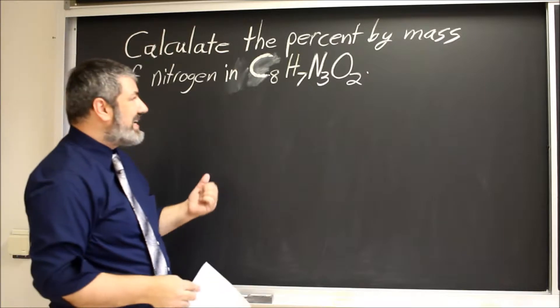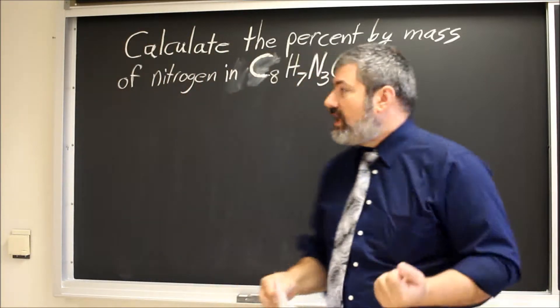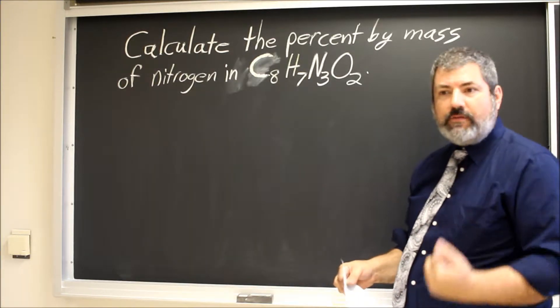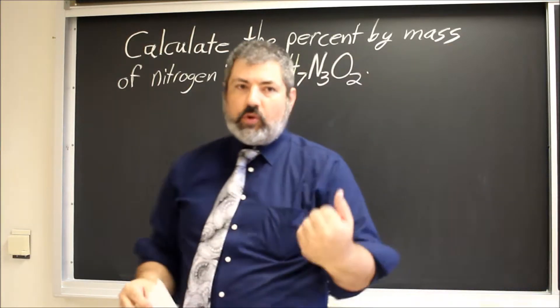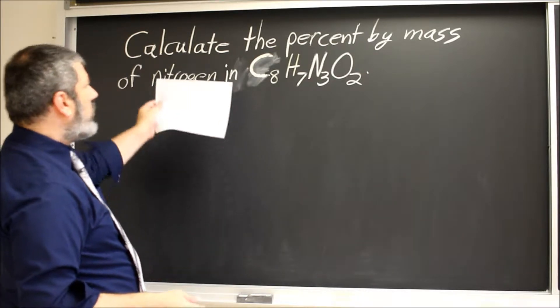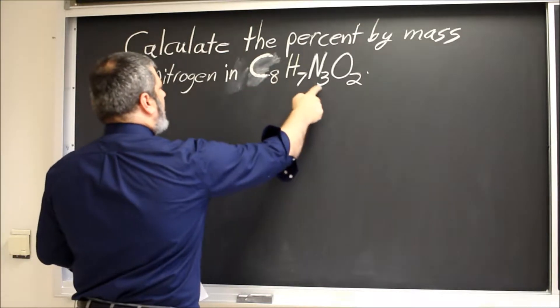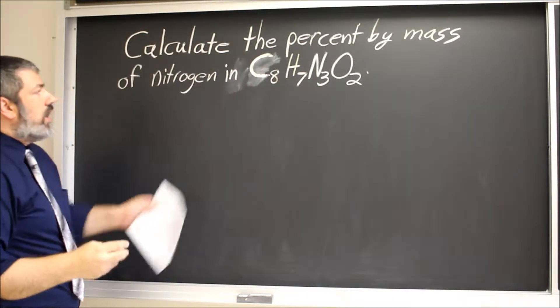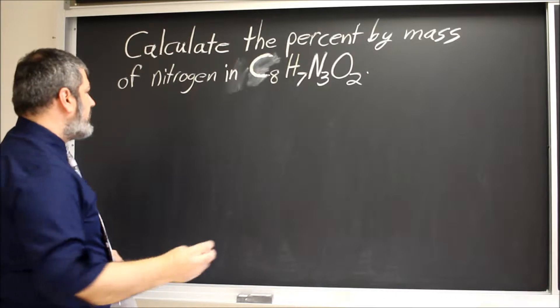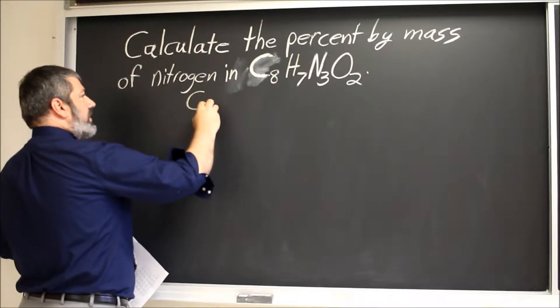This particular type of problem doesn't require anything that you haven't seen before, but it's very important to remember the fundamentals of being able to go from grams to moles and how we calculate molar mass. So we want to calculate the percentage by mass of nitrogen in C8H7N3O2. I like to work it out systematically, so you could do a lot of this work in your calculator.